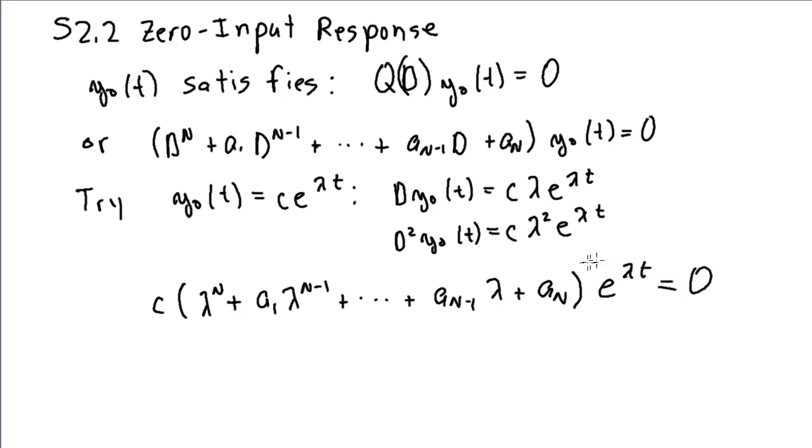I'll have solutions if I can find lambda values such that this is equal to zero. Or this was my Q polynomial. I want to find values of lambda such that this polynomial, or Q of lambda, is equal to zero.